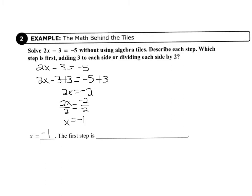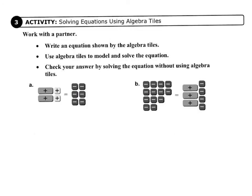And the first step was adding 3 to each side. Now we're going to move on to page 50 in your record and practice journal. It says to write an equation shown by the algebra tiles, use algebra tiles to model and solve the equation, and check your answer by solving the equation without using algebra tiles.